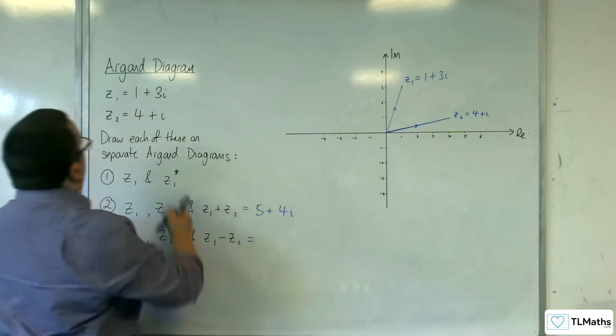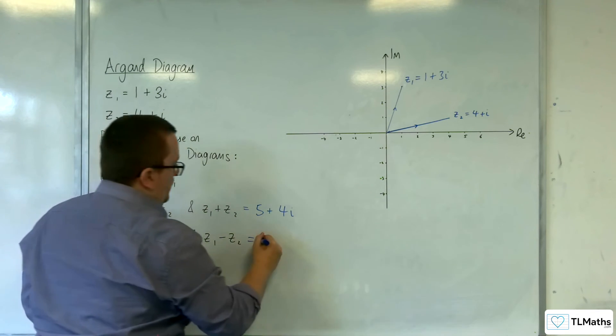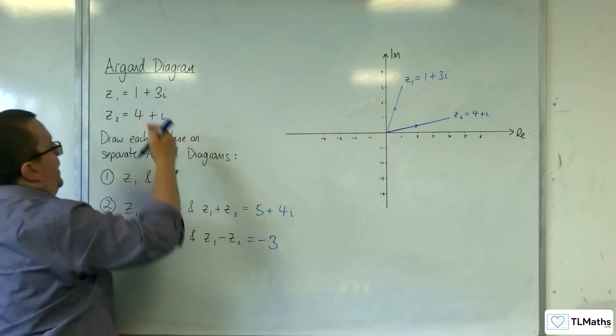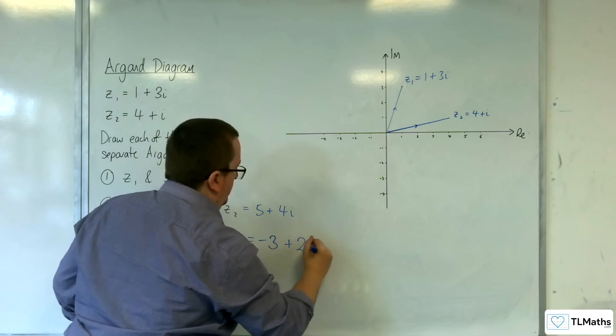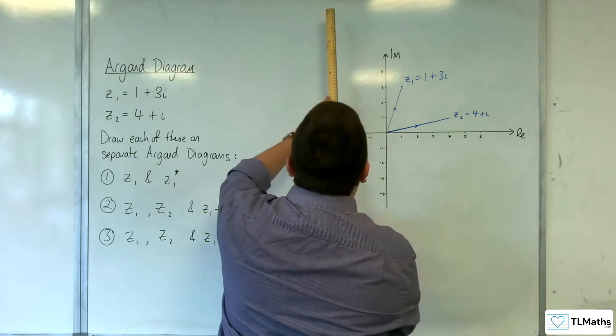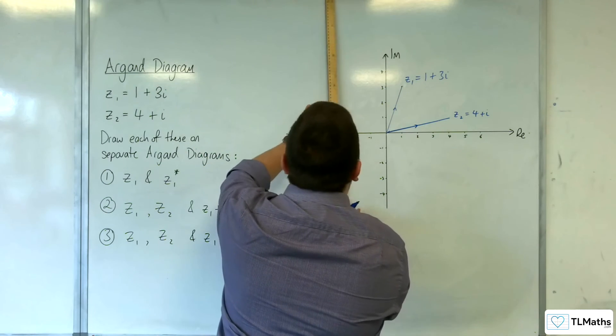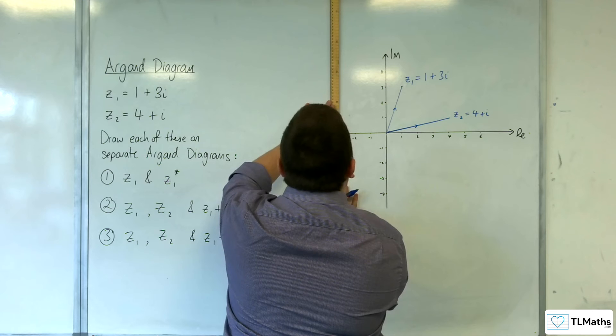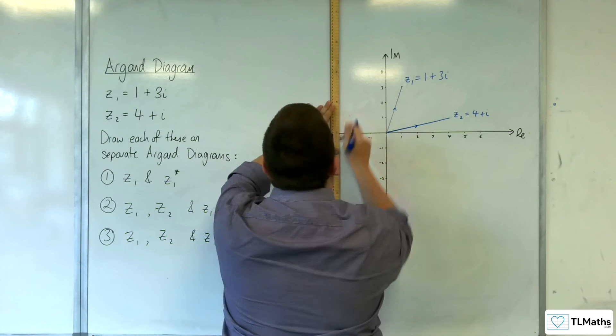So, 1 take away 4 is minus 3. 3i take away i is 2i. So, minus 3 plus 2i. So, minus 3. We want to add on 2i. So, that will be there.